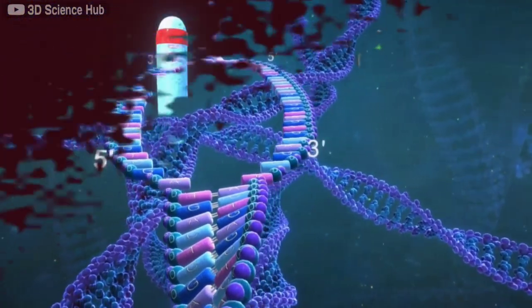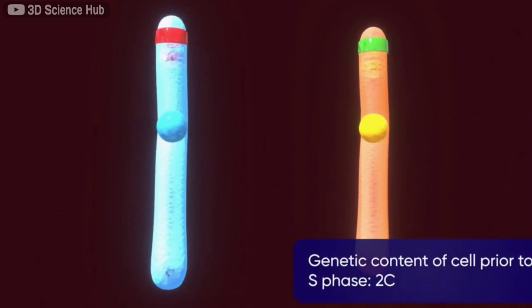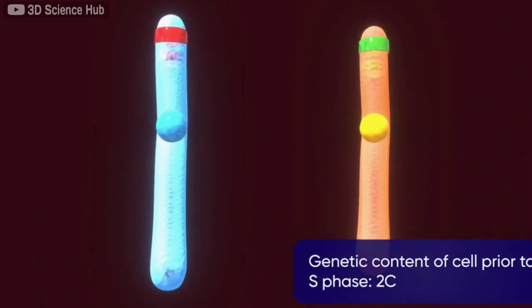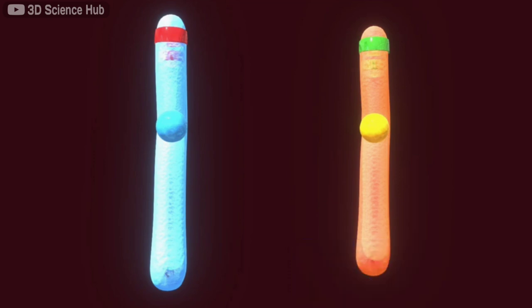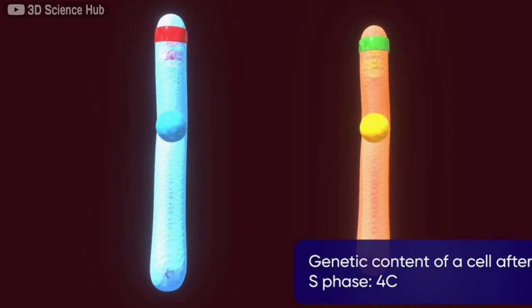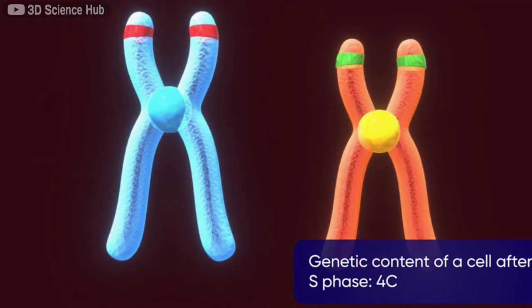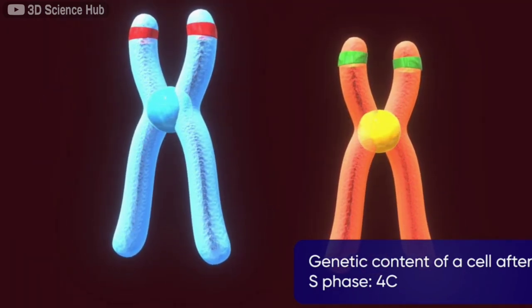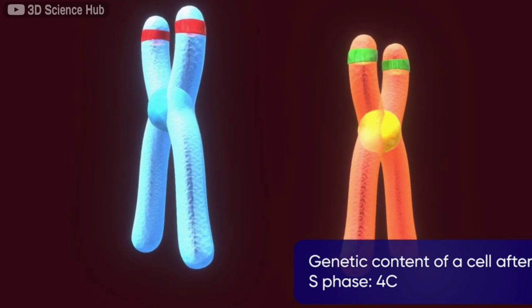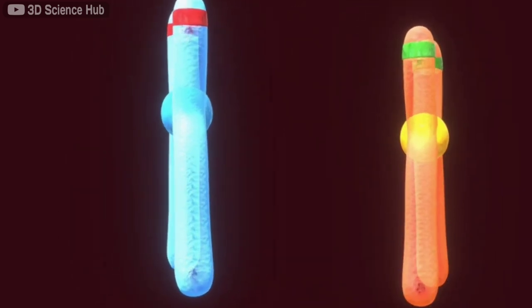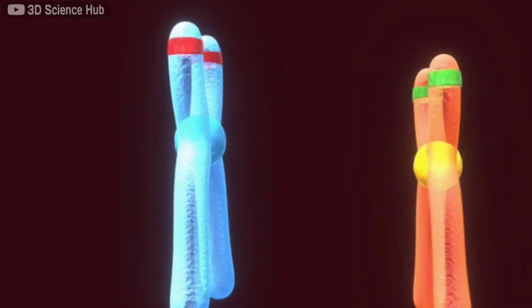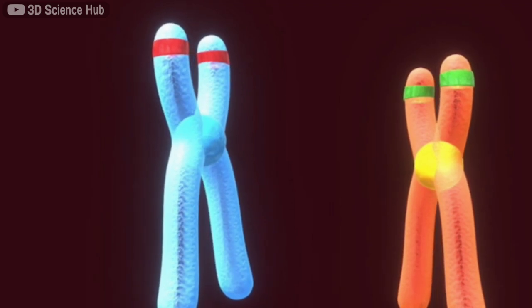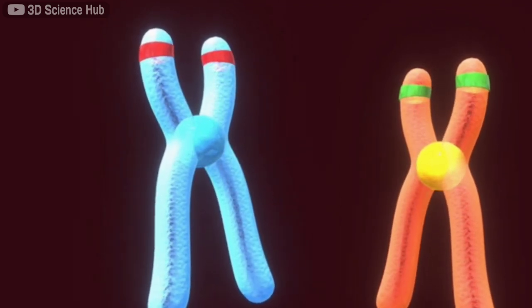Normally, the genetic content of a cell is noted as 2C because it only has two copies of each gene. After replication, as the genetic content is doubled, we could note it as 4C, meaning it will have four copies of that gene. However, despite the increase in the genetic material, the number of chromosomes remain the same.